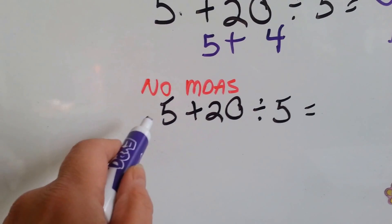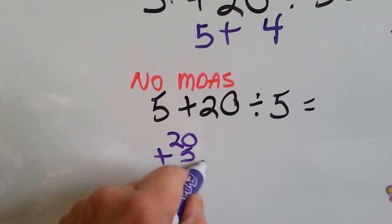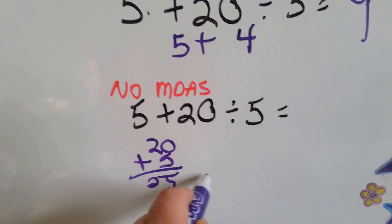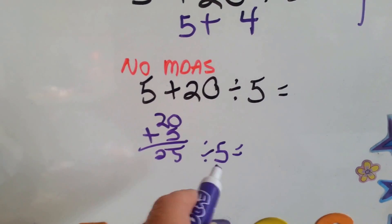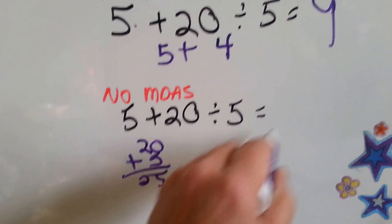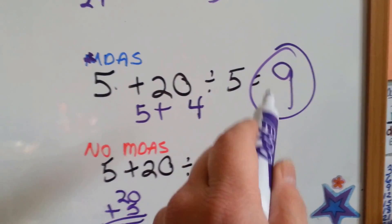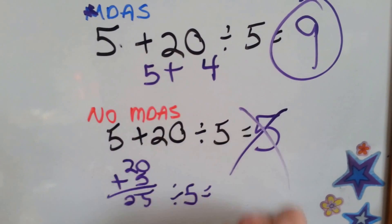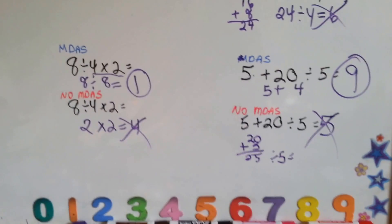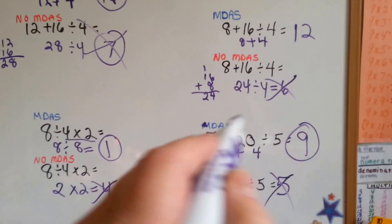Now, let's do it without order of operations. 5 plus 20 is 25. 25 divided by 5. How many 5s are in 25? 5, 10, 15, 20, 25. There's 5 of them. Look! That's the correct answer. You would get an A on your homework or your test. And this one, it would be marked wrong and you'd get an F. If you did your whole test that way, you'd end up getting none of the problems correct and you'd get an F on your test. So, you have to follow the order of operations.